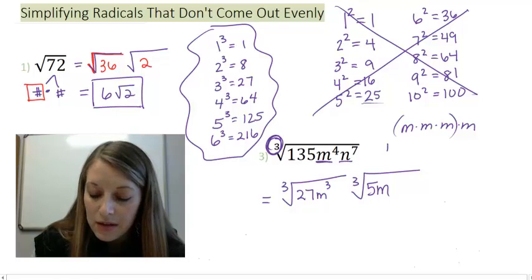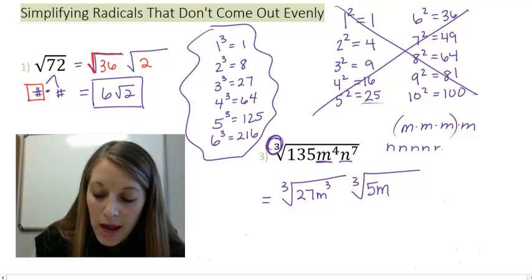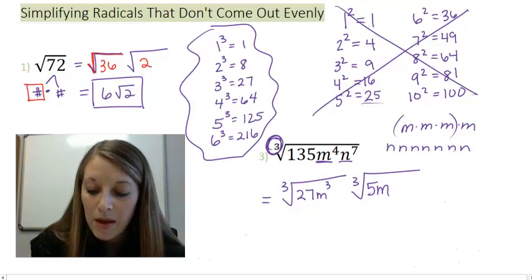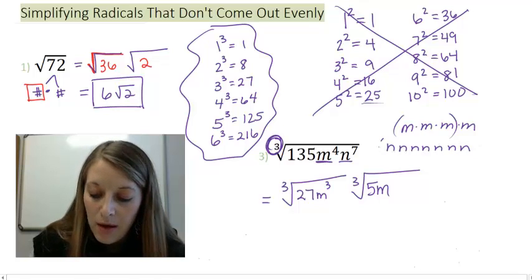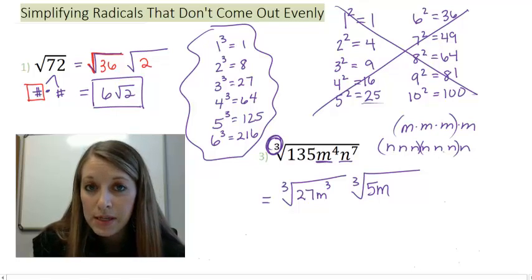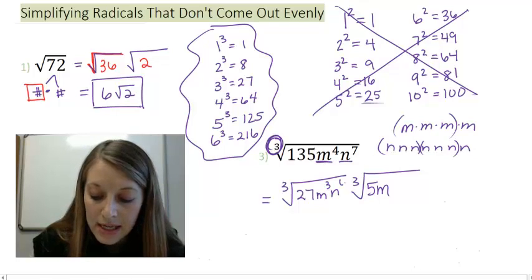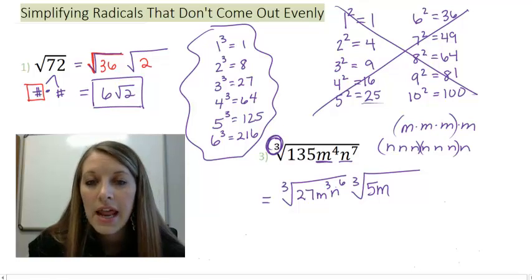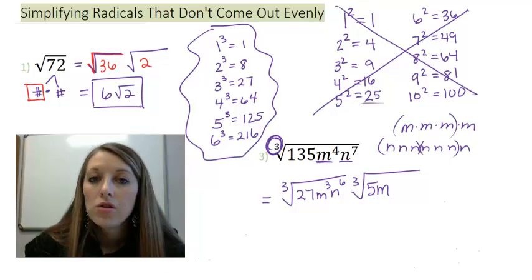Now my n's to the 7th. I'm going to write this out fully. But again, it's best if you can kind of skip this step. I have 7 of them. I want to pull out groupings of 3. So notice I have 2 groupings here. Or I have 6 of them total that I can pull out.